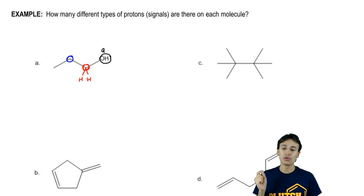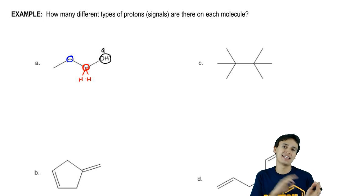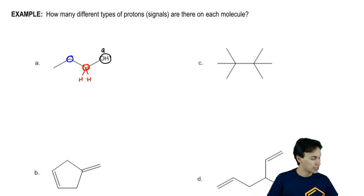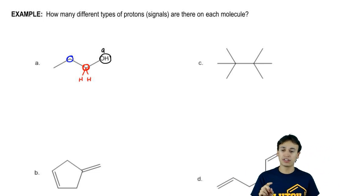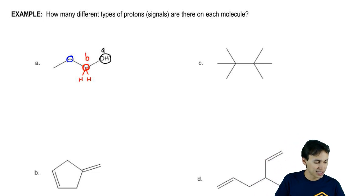...are going to be a little bit more de-shielded than the blue ones because they're going to be closer to something electronegative. I would actually expect that the red ones would be a little bit more downfield. You guys remember those words downfield and upfield? Anyway, because of the fact that those two red hydrogens are attached to the same atom, we're going to say that's the second type.